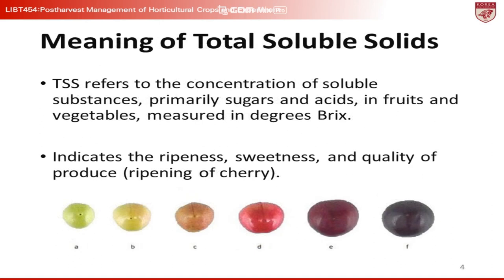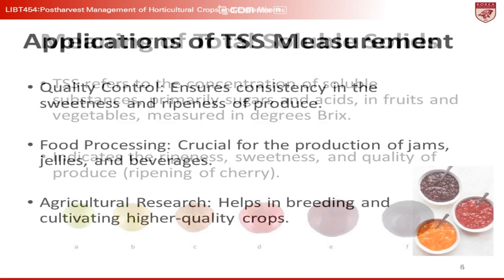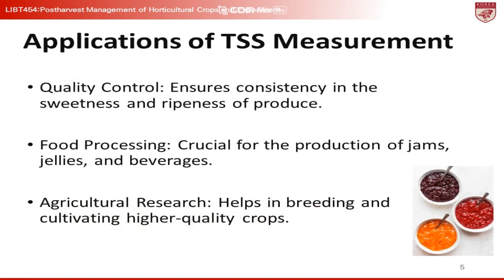TSS refers to the concentration of soluble substances, primarily sugars and acids, in fruits and vegetables measured in degrees Brix. It indicates the ripeness, sweetness, and quality of produce. TSS provides an important, yet partial, snapshot of the produce's quality, which is invaluable in agriculture and food production processes such as quality control to ensure consistency in food processing for creating jams, jellies, and beverages, and in agricultural research to aid in breeding and cultivating higher quality crops.